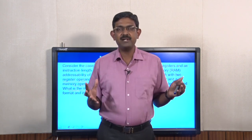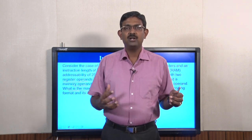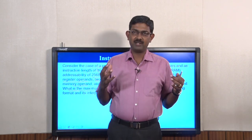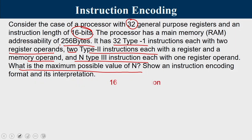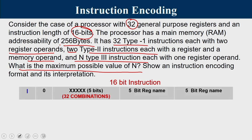If we want to make use of all combinations present in a 16-bit instruction, we can have 2^16 various combinations. In a Type 1 instruction, 5 bits are used for mentioning each register name. Since we have 32 general purpose registers (R0 to R31), a 5-bit field is needed to represent them. So 5 plus 5 equals 10 bits are used for the two register operands. Since there are 32 such instructions, we need another 5 more bits for the opcode.